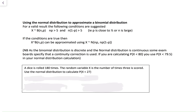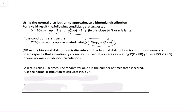Using a normal distribution to approximate a binomial distribution is only valid in certain cases. If X ~ B(n, p), then np > 5 and n(1−p) > 5 must both hold — either p is close to 0.5 or n is large. If the conditions hold, approximate using a normal distribution with mean np and variance np(1−p). Check your exam board — some require a continuity correction, some don't. If you've never heard of it, you probably don't need it, but it's worth checking.